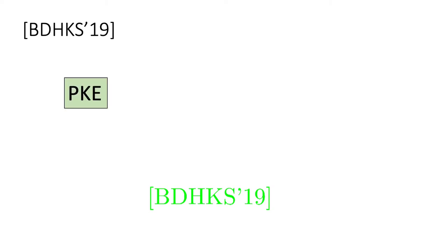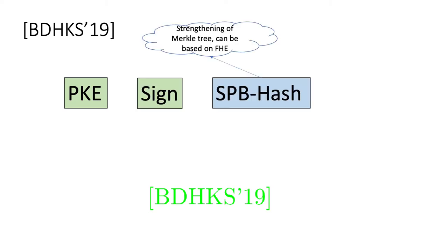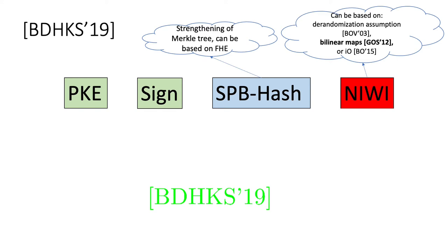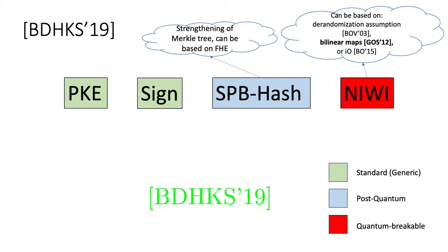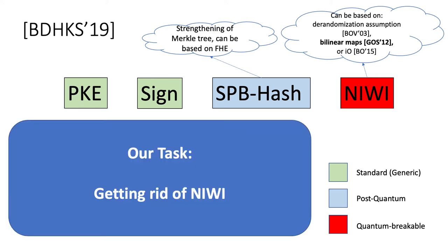Our construction builds upon the BDHKS framework. So let us take a brief look at their construction. They use a public key encryption with additional properties, a standard signature scheme, a somewhere perfectly binding (SPB) hash, which can be thought of as a variant of a Merkle tree with stronger statistical properties that can be instantiated from FHE schemes, and finally a non-interactive witness indistinguishable (NIWI) proof system, which can be based on a derandomization assumption involving NP, bilinear maps, or indistinguishability obfuscation. The first two components can be obtained from a variety of standard assumptions, including LWE. Similarly, somewhere perfectly binding hash schemes can also be instantiated based on LWE via FHE schemes. NIWI proofs, however, are instantiated in most cases from pairing-based assumptions, which are known to be broken by efficient quantum attacks. So for our purposes, we are looking to replace the usage of NIWI proofs in the BDHKS construction.